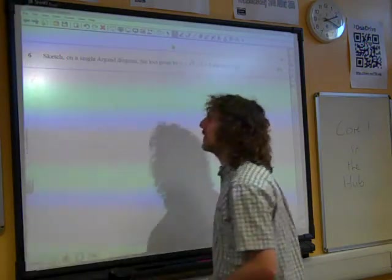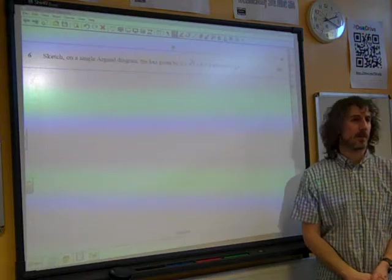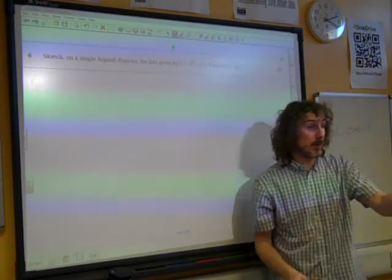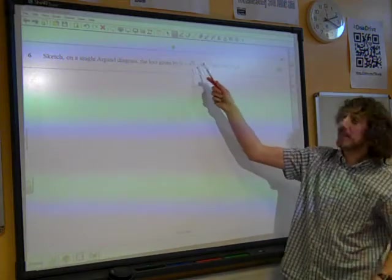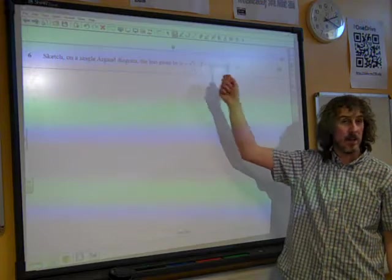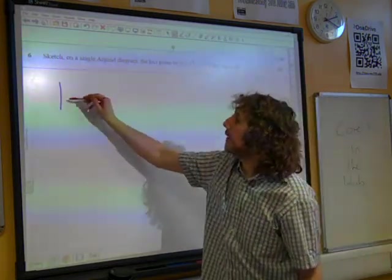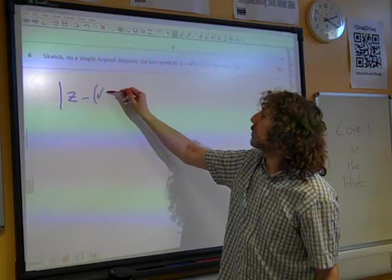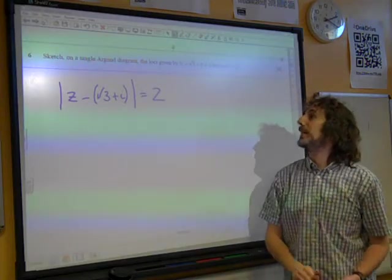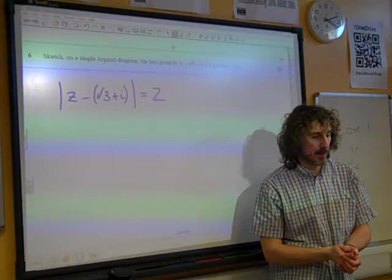Question 6. Sketch a single Argand diagram, the loci given by these two expressions here. Right, well, remember what we talked about with this. First thing to do, before you do anything else, before you even think anything else, is to rewrite that to get it in the form that we want it to be. So that is z minus root 3 plus i. That is so important that we do that so that we get our point established straight away without any messing around.